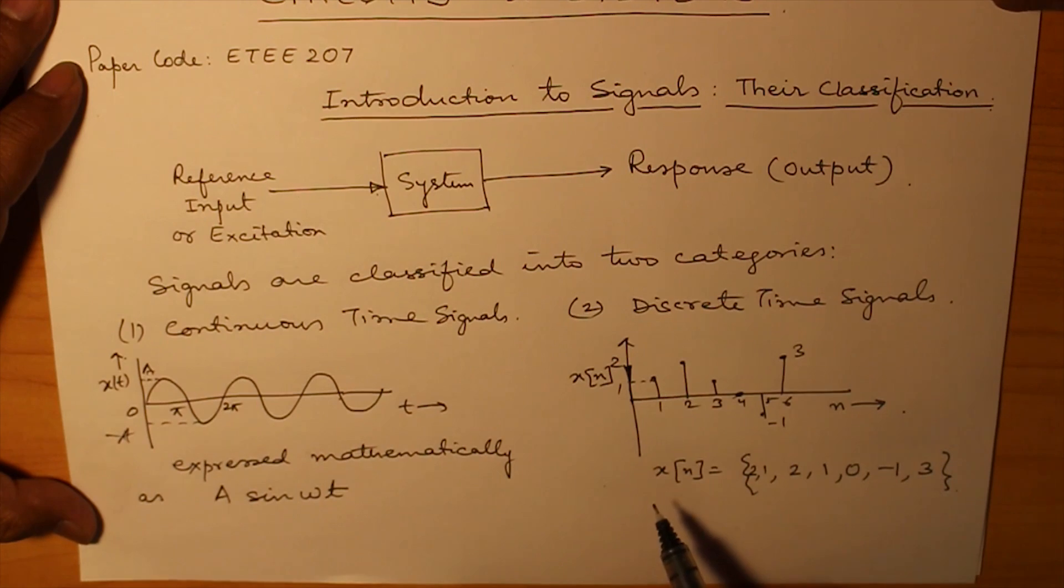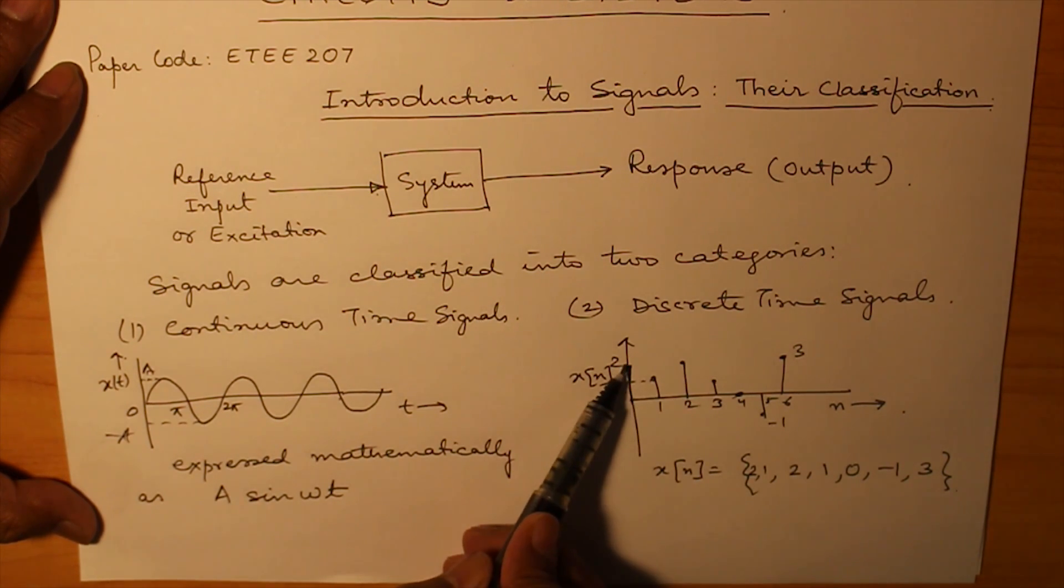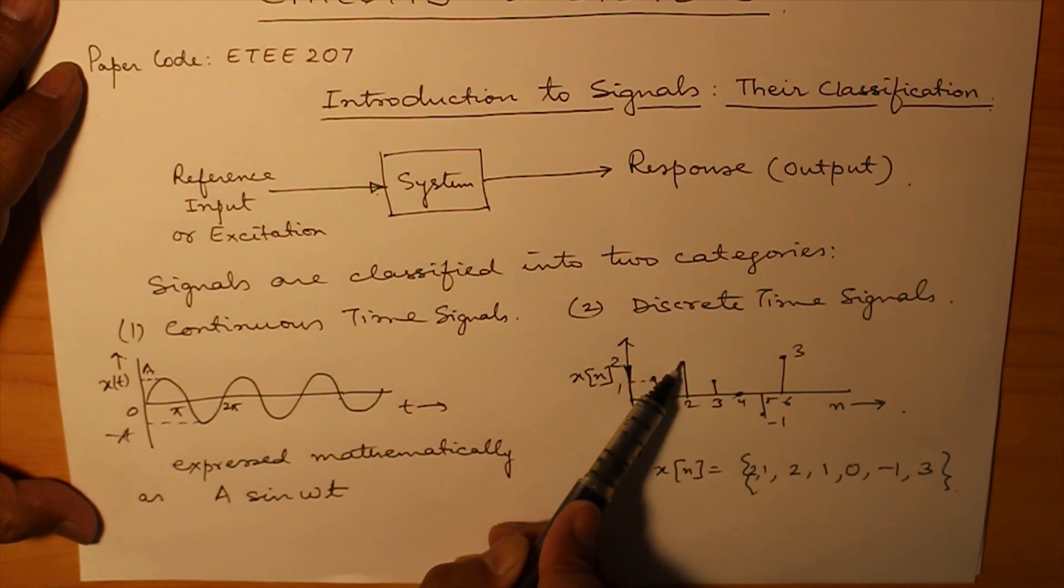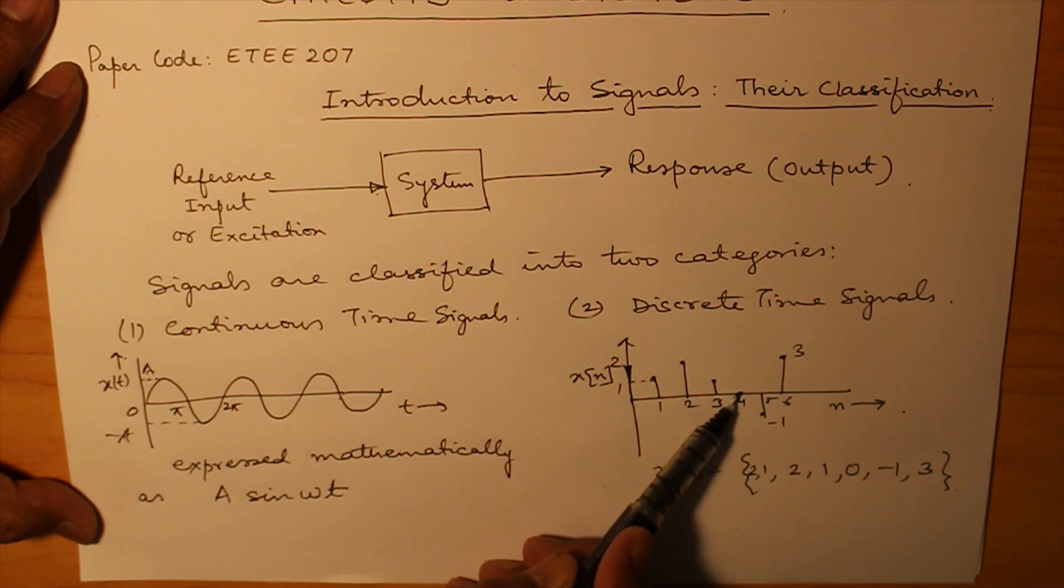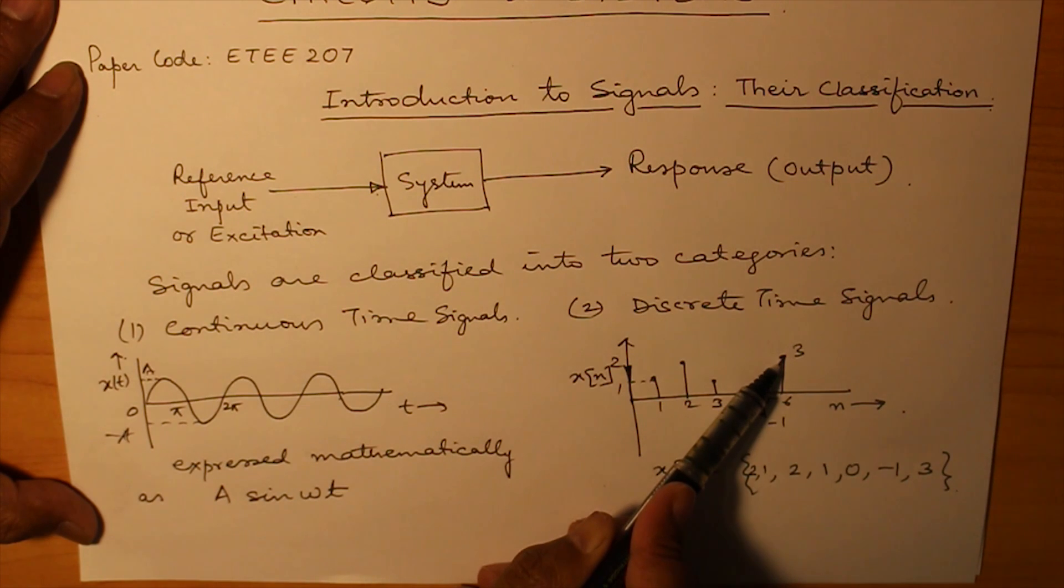And here the discrete time signal, it cannot be represented mathematically. Except, of course, it can be written in the form x of n is equal to 2, this value, 1, again 2, 1, 0, minus 1, and 3.